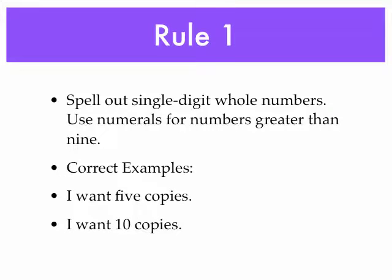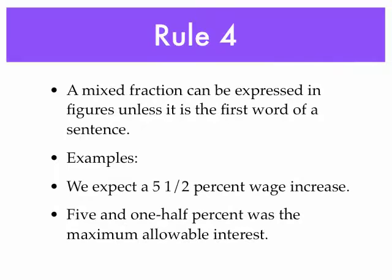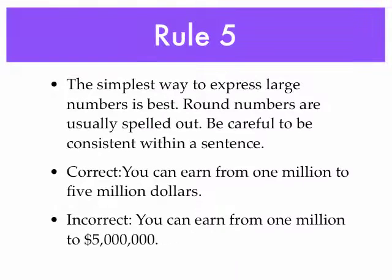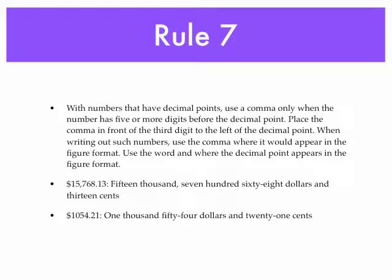Spell out single-digit whole numbers and be consistent within your categories. Always spell out simple fractions and use hyphens with them — 'one-half of the pies' or 'a two-thirds majority is required for that bill to pass in Congress.' Mixed fractions can be expressed in figures unless they are the first word of a sentence. The simplest way to express large numbers is best. Write decimals in figures and put a zero in front of a decimal unless the decimal itself begins with a zero. Use a comma only when the number has five or more digits before the decimal point.